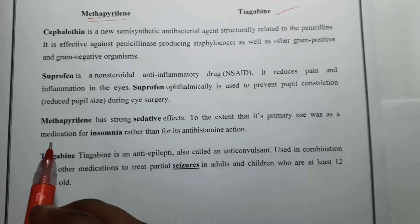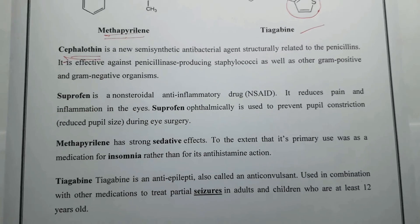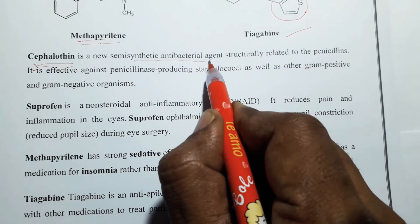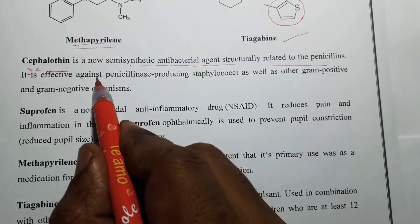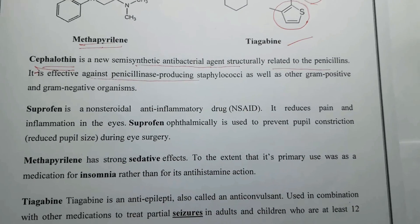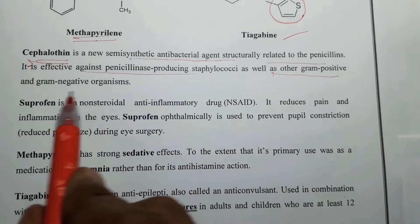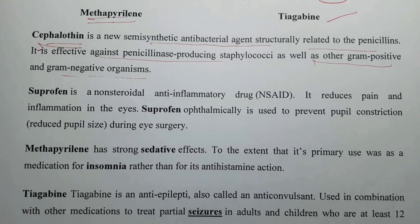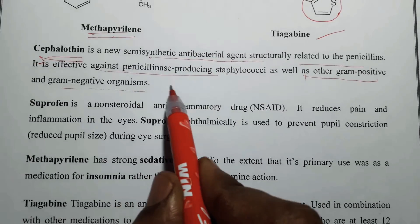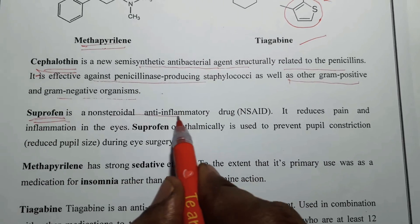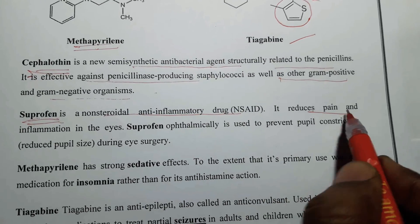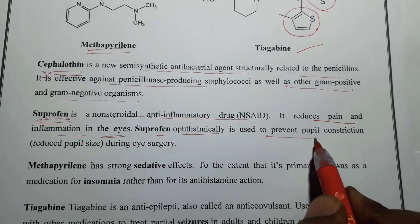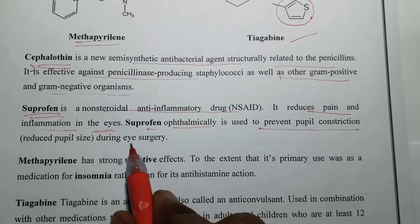Cephalothin is a beta-lactam antibiotic compound. It is a semi-synthetic antibacterial agent structurally related to the penicillins, effective against penicillinase-producing staphylococci as well as other gram-positive and gram-negative organisms. Suprofen is a non-steroidal anti-inflammatory drug used to reduce pain and inflammation, especially in the eyes, and is ophthalmically used to prevent pupil constriction during eye surgery.